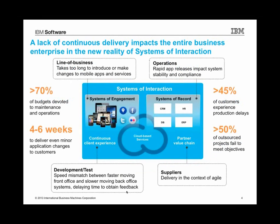One of the things we observe over and over again is just a general lack of ability to continuously deliver software. This manifests with people in the line of business feeling frustrated because it takes too long to get things out the door. The development team is almost always doing lean and agile processes for mobile, but even as fast as they can go, the operations team is on a completely different timescale and frequency. They're focused mainly on how to make sure that systems are stable and compliant. And thus, 70% of budgets are devoted to maintenance operations, and it takes a month or two months to deliver even a minor change in software development, mainly because getting it out the door just takes forever.